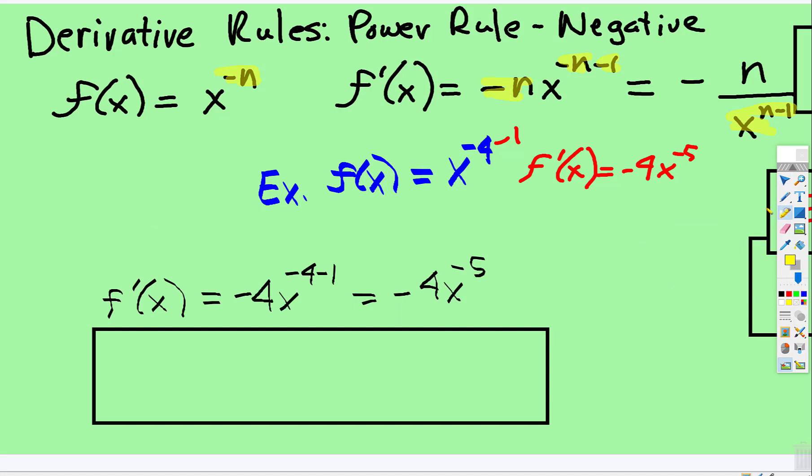And remember, we don't want to have negative exponents in an expression. So remember, if you have x to the negative anything, you rewrite it as 1 over x to that positive exponent.